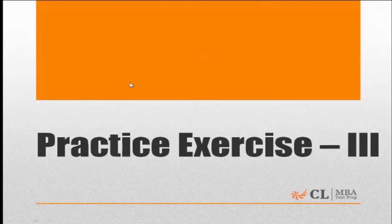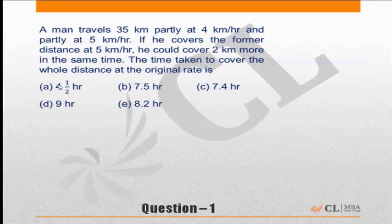Practice exercise 3: time, speed, distance. Let's go through the questions. The first question: A man travels 35 kilometers partly at 4 kilometers per hour and partly at 5 kilometers per hour. If he covers the former distance also at 5 kilometers per hour, he could cover 2 kilometers more in the same time. The total time taken to cover the whole distance at the original rate is...